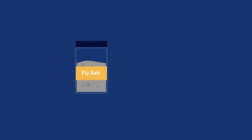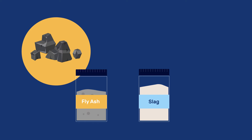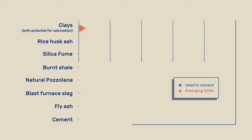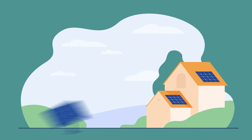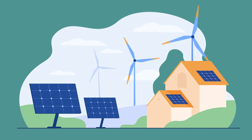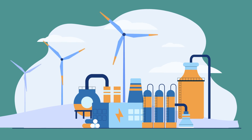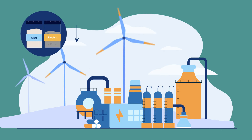Historically, the most used SCMs are fly ash and slag, which are side products respectively from coal-burning power plants and blast furnaces from the steel industry. Unfortunately, the availability of those SCMs is limited with respect to the amount of cement produced. In addition, as we transition to cleaner energy sources and greener methods to produce steel are implemented, the availability of these materials is expected to decrease.